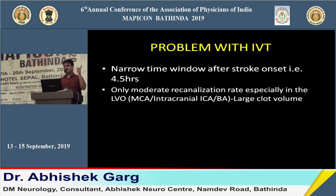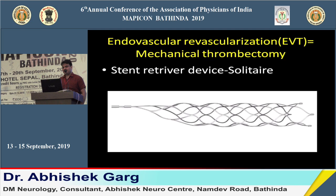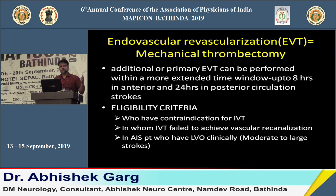To overcome this, mechanical thrombectomy — endovascular revascularization — is increasingly used. A stent retriever device called the Solitaire device, currently available only at higher centers, can remove clots from the ICA up to the MCA and basilar artery. This technique is also available for patients with contraindications to IV thrombolysis and those in whom IV thrombolysis has failed.